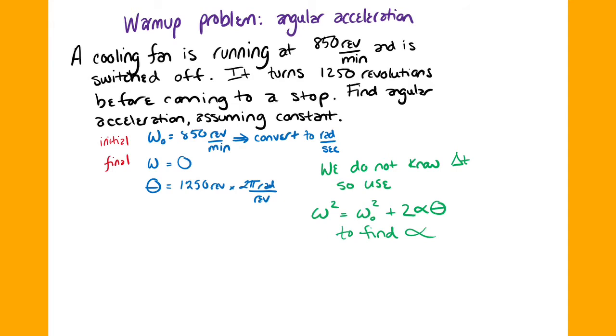So omega naught is 850 revolutions per minute, which you could easily convert to radians per second, knowing that one revolution is two pi radians, and there are 60 seconds in a minute. And then because it's coming to a stop, omega final is just zero. Theta is the distance it turns when it's coming to a stop. So theta in this case is 1250 revolutions, and how many radians that is, is you multiply that 1250 revolutions by 2 pi radians per revolution. Since in this problem we do not know how long it takes this fan to come to a halt, we could use the kinematic equation omega squared equals omega naught squared plus 2 alpha theta in order to find alpha, the angular acceleration.